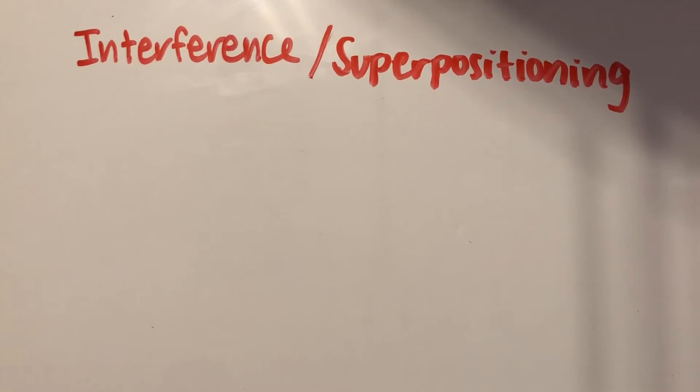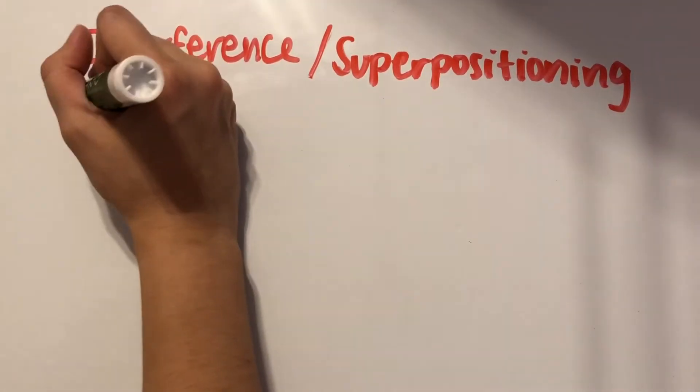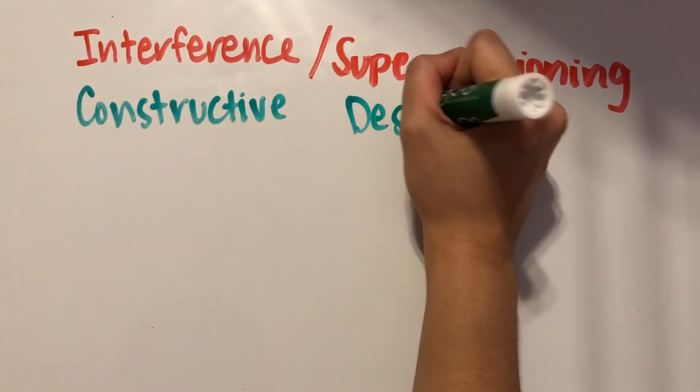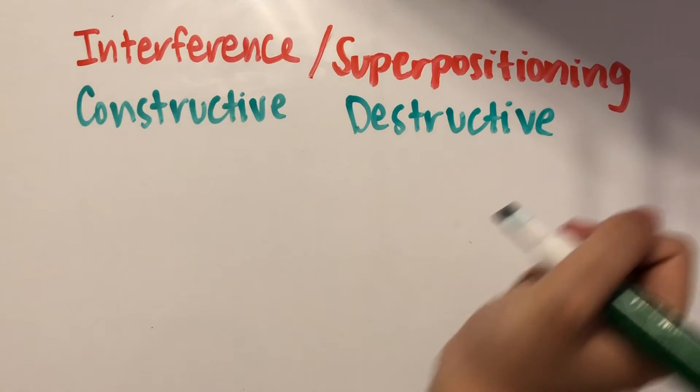Interference is when multiple waves come into contact with each other. When two waves interfere, something called superpositioning can occur, and superpositioning is either constructive or destructive.